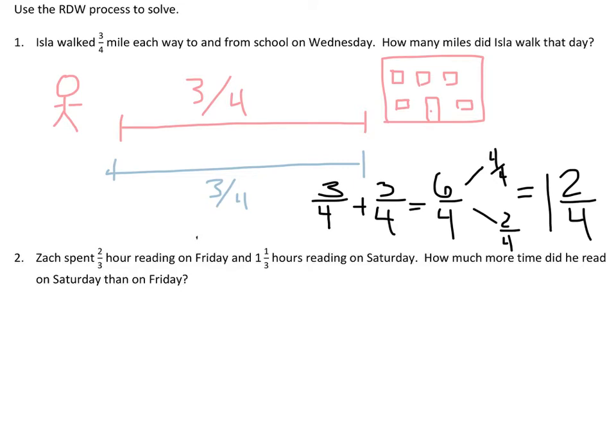Let me get my typing ready and choose a color here. Isla walked one and a half miles to and from school. All right, let's see how this looks. There you go. She walked one and a half miles to and from school. You could say one and two-fourths miles. All right, now how about number two?